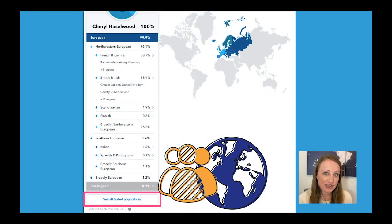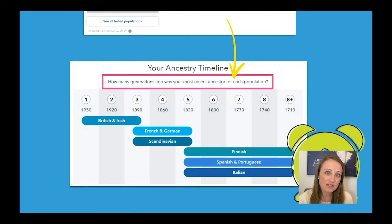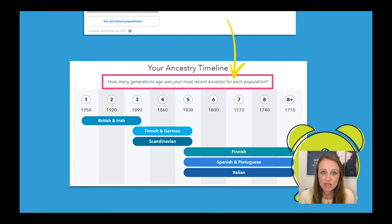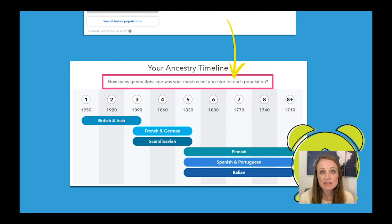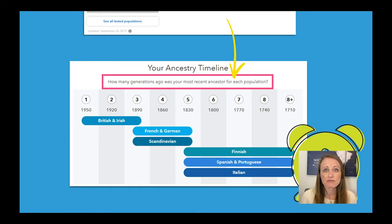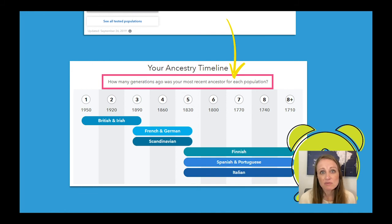After you review the reference populations and get a feel for where you're from and not from, if you scroll down just below that map, you'll see another map — it's actually a timeline that tells you when your ancestors were in these areas. This is really important because you may see places in your ethnicity results that you don't recognize at all. For example, Finnish, Spanish and Portuguese, Italian — those are locations that don't exist in my family tree at this time. You might think something's wrong, or wonder if your genealogy is off. But it turns out those locations are just pushed further back in time, meaning you may never find a name to go with that particular place.